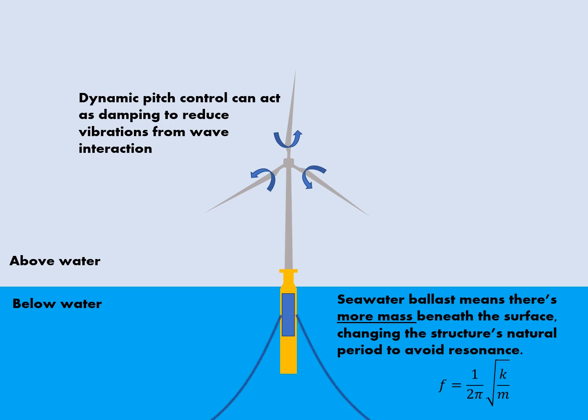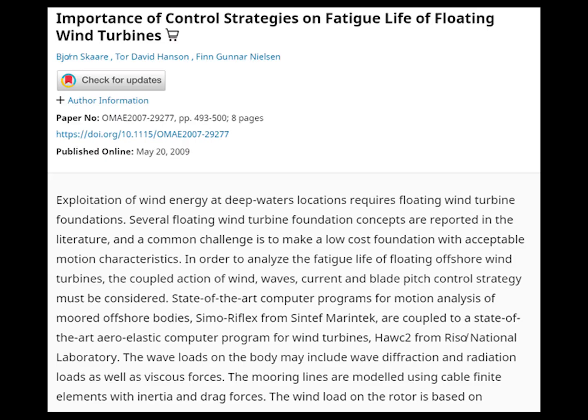Another method is to deploy dynamic pitch control, which can change the pitch of the blades to dampen the force of vibration on the entire system. Finally, mooring lines are used to add tension to the structure and stop it from moving around, which can also dampen the vibrations.